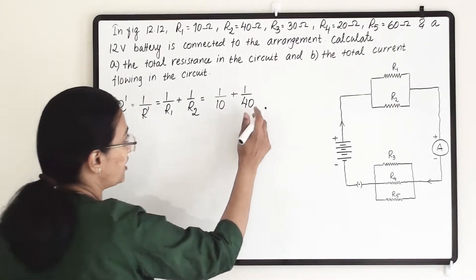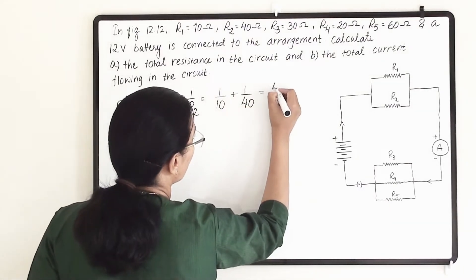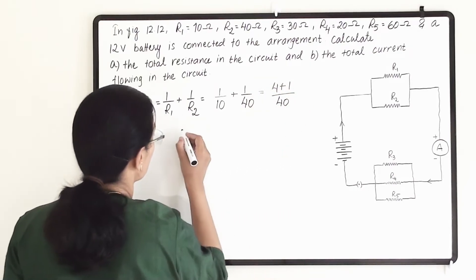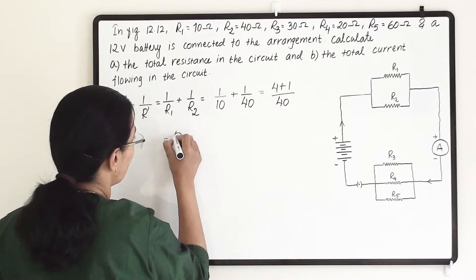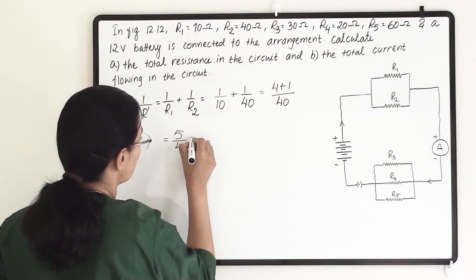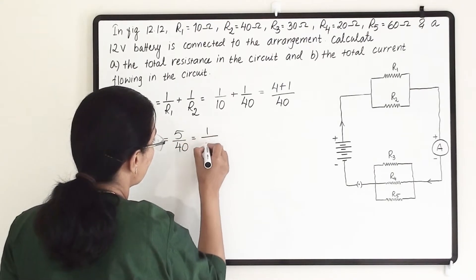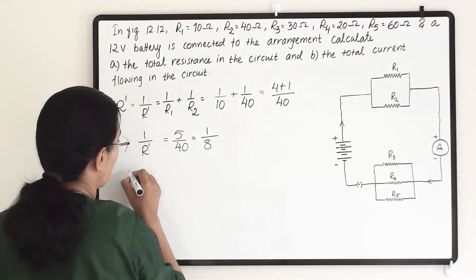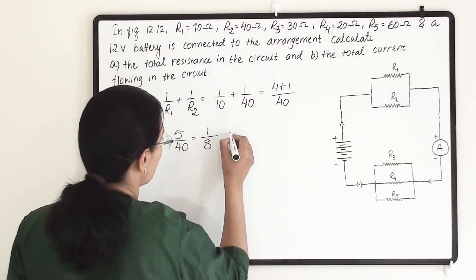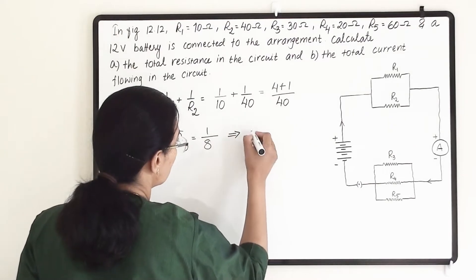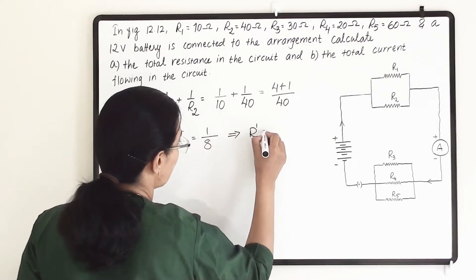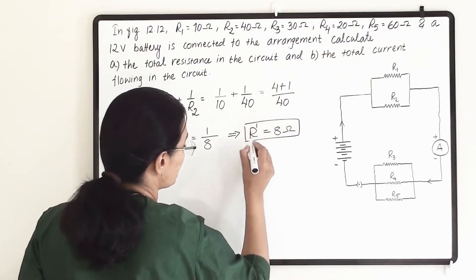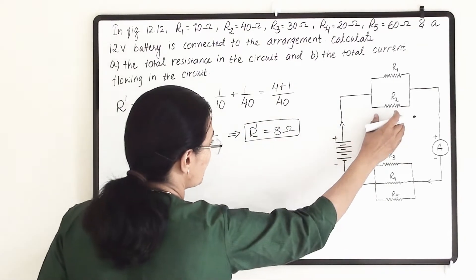Here the LCM is 40, so we get 4 plus 1 divided by 40, which gives us 5 divided by 40, which equals 1 divided by 8. Taking the reciprocal of both sides gives us R dash equals 8 ohm. So from the first unit we got a combined resistance of 8 ohm.